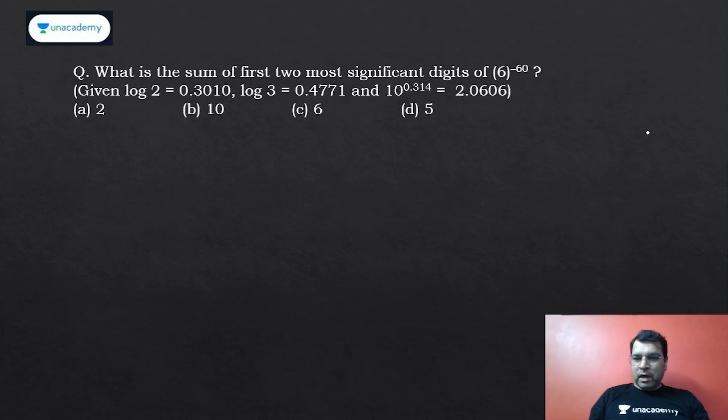But now this question asks: what is the sum of the first two most significant digits? When you solve 6^(-60), it will come as 0.000... with some zeros, then the digits will start coming—a, b, c and so on. After the zeros, what are the two most significant digits, and you need to find their sum. This was quite a different question in terms of logs.